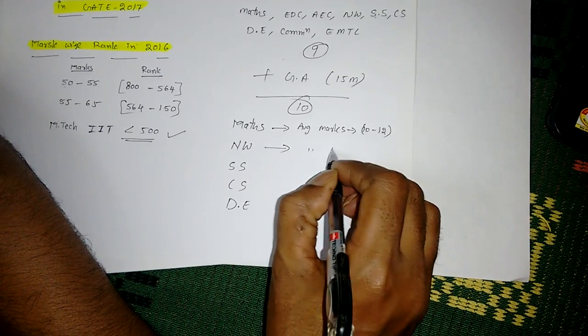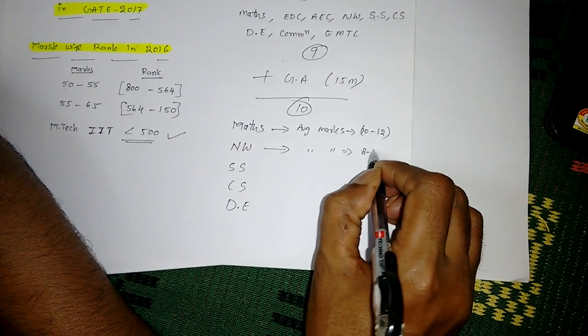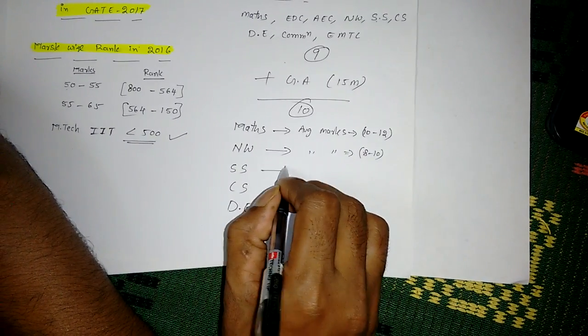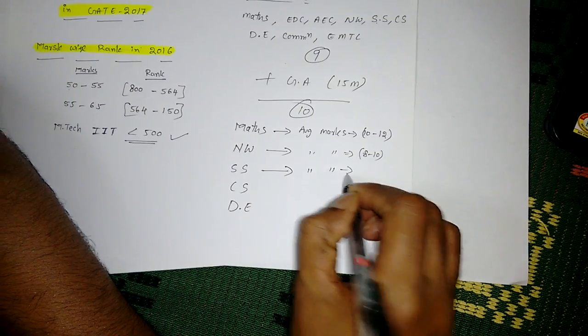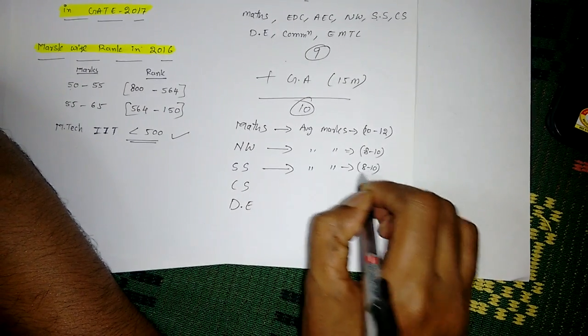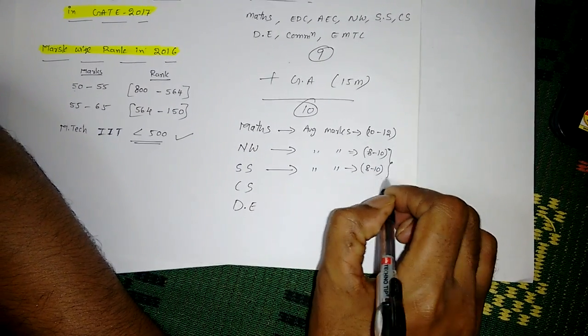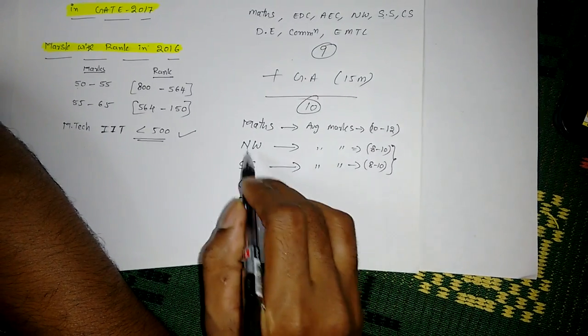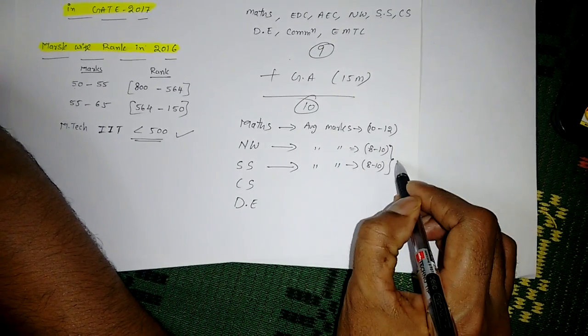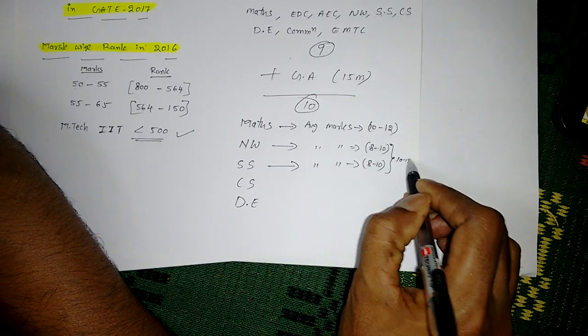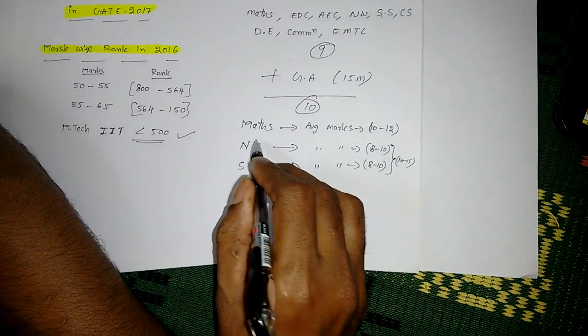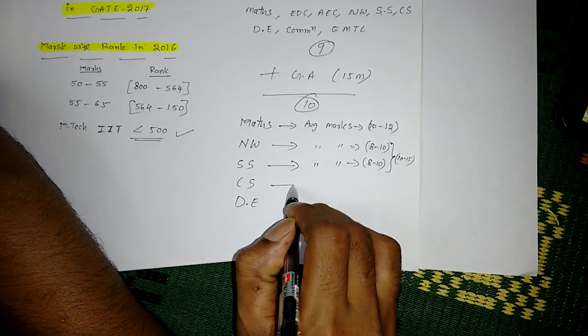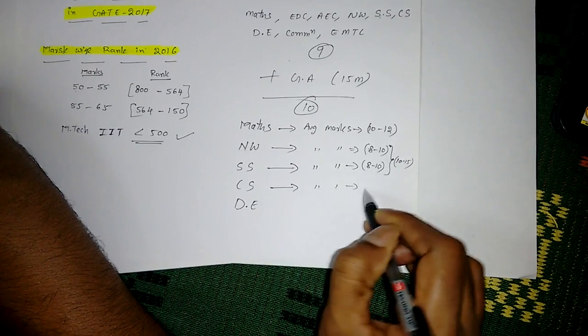Network Theory, the average marks will be around 8 to 10. The average marks in Signal Systems is also 8 to 10. But from 2015, these two are in the same subject, so around 10 to 15 marks is the average for Networks and Signal Systems.